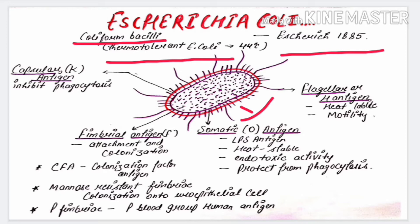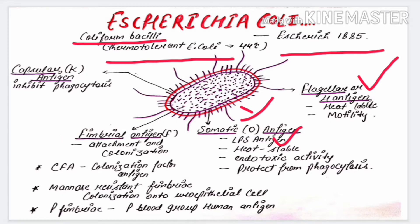Next we are going to discuss the virulence factors, which include two things: first, the antigenic structure of E. coli, and second, toxins. E. coli possesses four surface antigens: somatic antigen (O-antigen), flagellar antigen (H-antigen), fimbrial antigen, and capsular antigen (K-antigen).